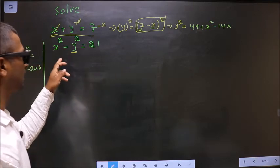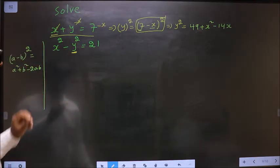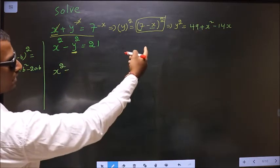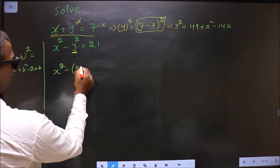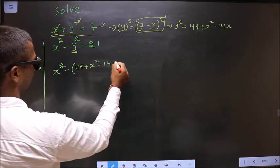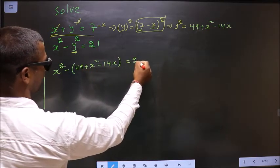Let us replace in this. So what do I get? X square minus, in place of y square, put that. 49 plus x square minus 14x equal to 21.